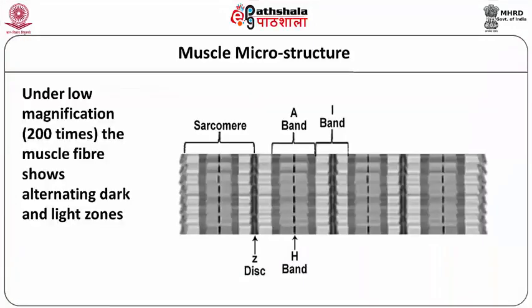When you look at the muscles under large magnification — for example under an electron microscope at around 200 times — you will see some band-like structures. One band to another band is called a sarcomere, and within the sarcomere there are bands like the A band and the I band. In between the A band there is a Z band, and two sarcomeres are connected by a Z disc.